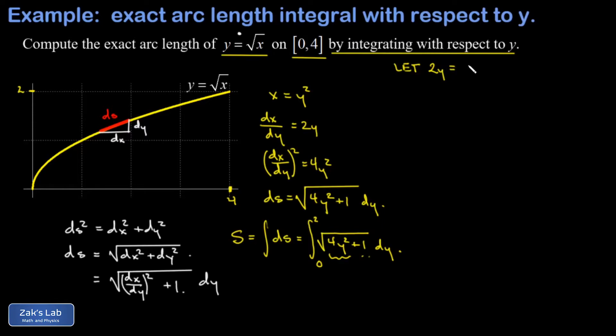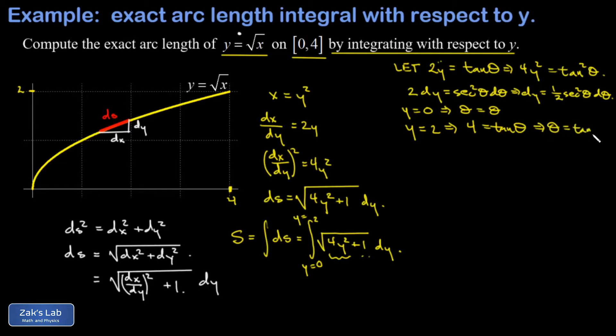So my trig substitution is to let 2y equal tangent theta. And that guarantees that 4y squared will be tangent squared theta. And I have to transform the differential as well. So I differentiate both sides, multiply by d theta on both sides, and I get 2dy is equal to secant squared theta d theta. In other words, dy can be replaced with a one half secant squared theta d theta. I'm also going to transform the limits of integration here. So when I sub in y equals 0, that would give me 0 equals tangent theta, so theta is equal to 0. When I sub in y equals 2, I would get 4 equals tangent theta. And we're not talking about a special angle here. I just have to write that theta is the angle whose tangent is 4, the inverse tangent of 4.